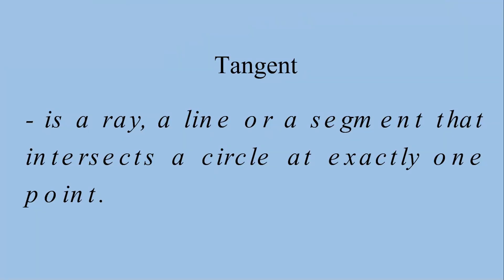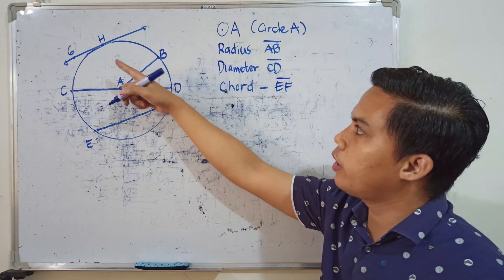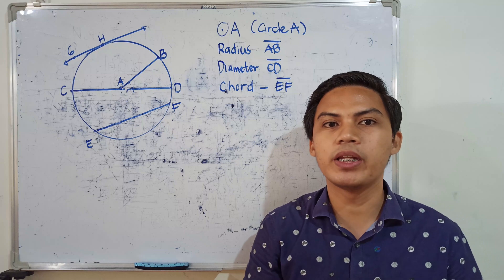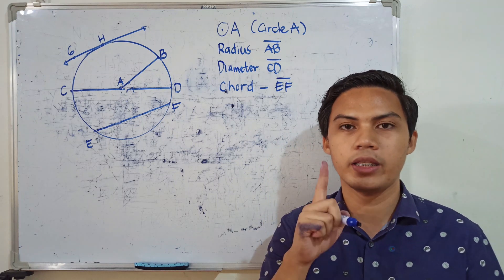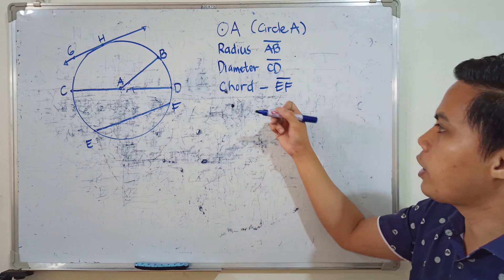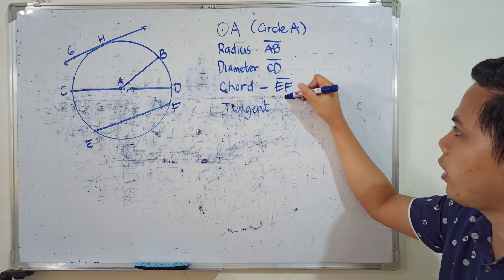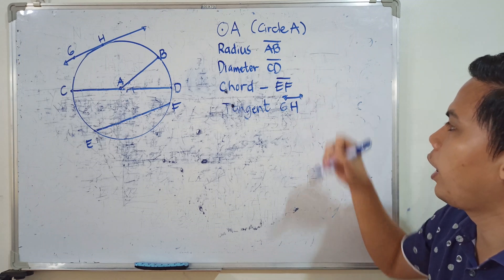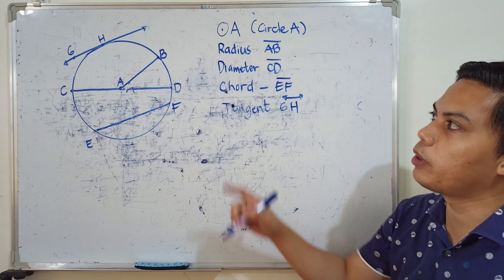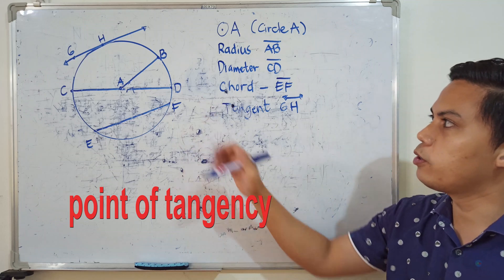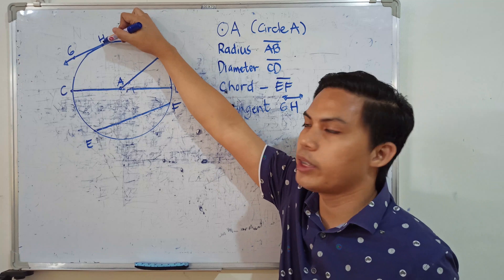Next part — the tangent. A tangent is a ray, a line, or a segment that intersects a circle at exactly one point. Looking at our tangent line, it intersects the circle at exactly one point. So our tangent line would be line GH or line HG. The intersection of the tangent line and the circle is called the point of tangency. In this case, the point of tangency is point H.